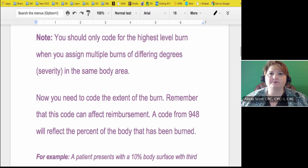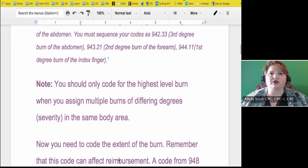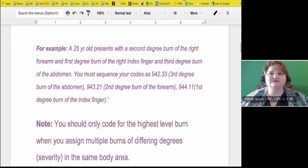A 25-year-old presents with a second-degree burn of the right forearm and first-degree burn of the right index finger and third-degree burn of the abdomen. You must sequence your codes as 942.33, third-degree burn of the abdomen, the 943.21, second-degree burn of the forearm, and the 944.11, first-degree burn of the index finger. That's the way that would be sequenced out.